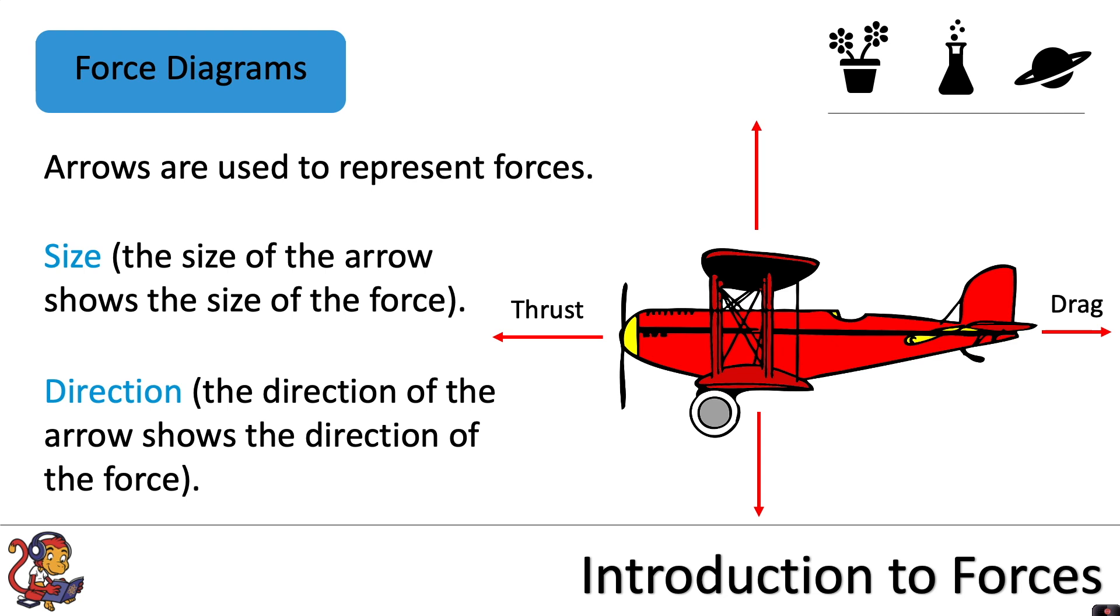Drag, which is pulling the plane backwards. It would also be acceptable to call this drag air resistance, which is pulling the plane backwards. And you've got weight or gravitational force, which is pulling the plane downwards. And you've got lift, which is pushing the plane upwards. Again, you may see this written as air resistance.